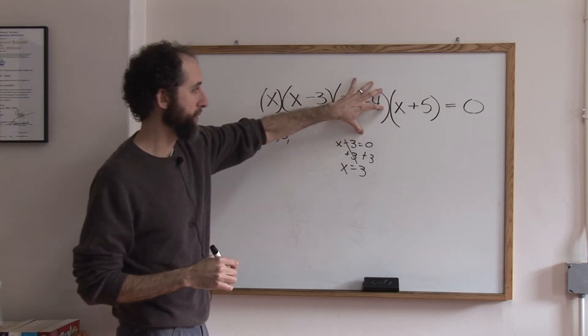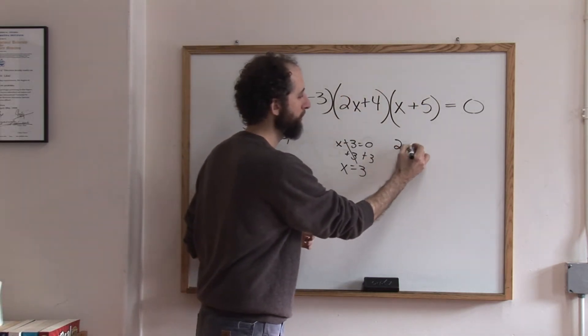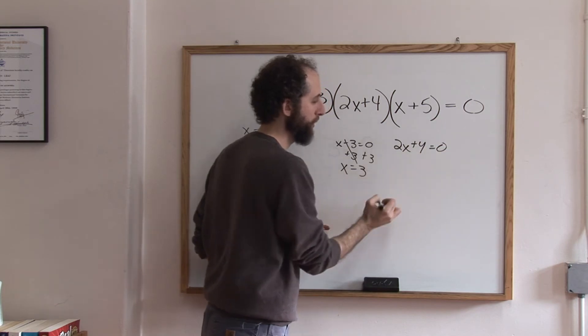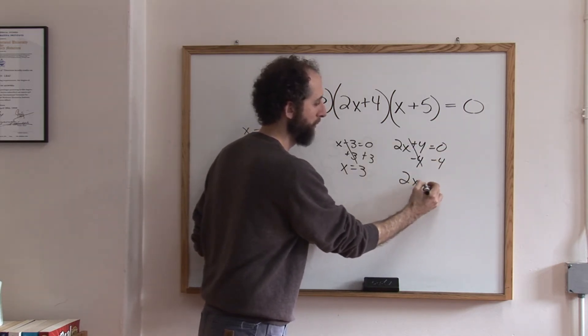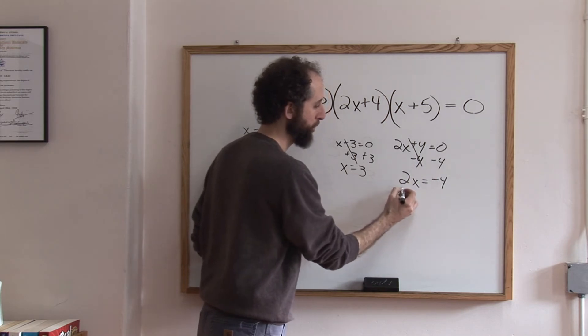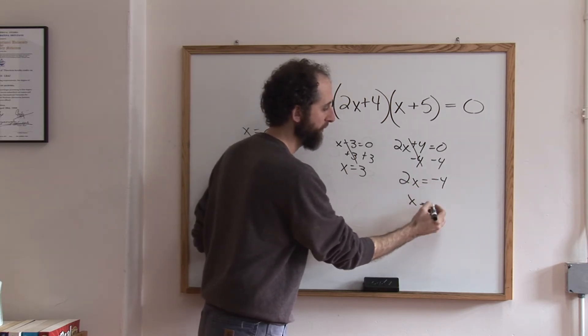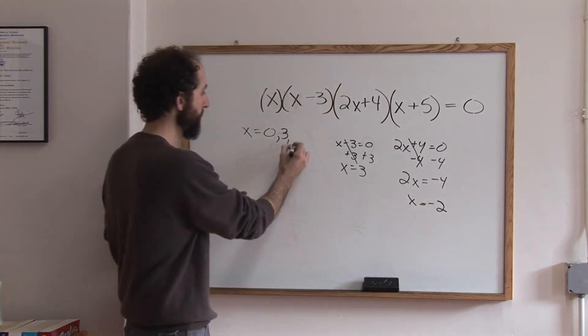Okay, what would make this thing equal zero? 2x plus four equals zero. Solve it. Divide by two. Negative four divided by two is negative two. There's another solution.